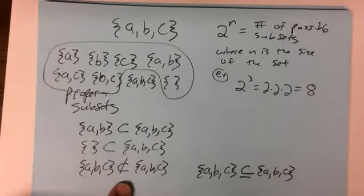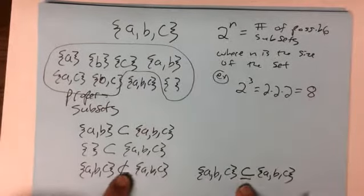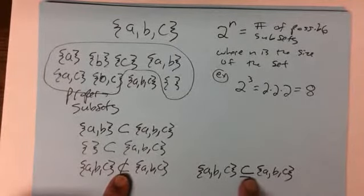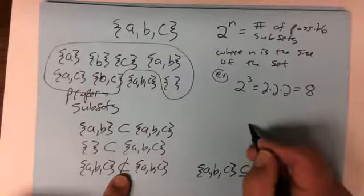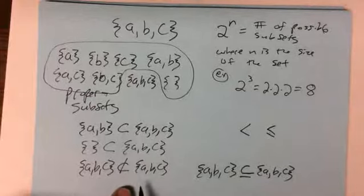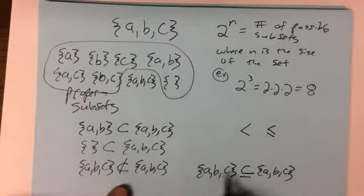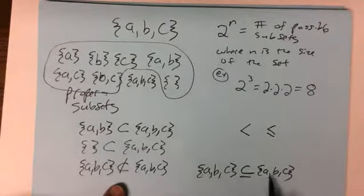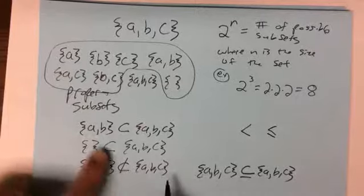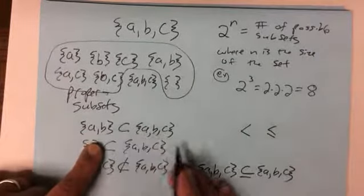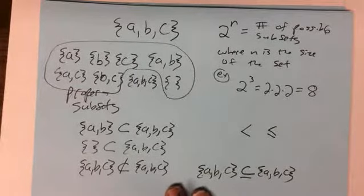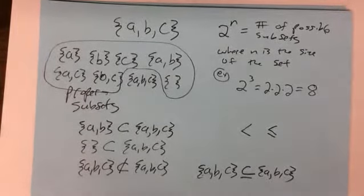One way to think about the subset symbols: the subset symbol with the underline is like 'less than or equal to,' and the proper subset symbol is like 'strictly less than.' So {A, B, C} is less than or equal to {A, B, C}, but {A, B} is strictly less than {A, B, C}, and the empty set is strictly less than {A, B, C}.